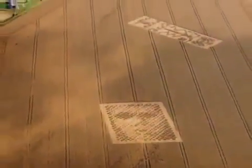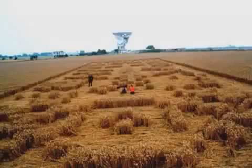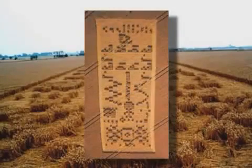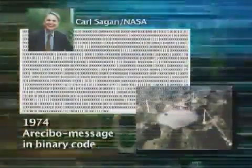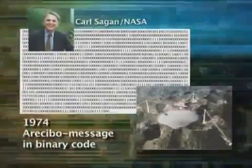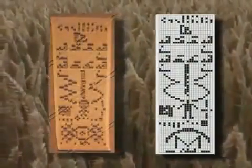Three days later the face was joined by something that looked like a data strip — rows of counters made out of standing and flattened crop. But soon an astonishing similarity was discovered: in 1974, astronomer Carl Sagan composed a message that NASA sent into space from the Arecibo telescope in Puerto Rico — binary figures constituting a graphic code presenting key factors about humans and the planet we live on. 27 years later, an identical pattern appeared in a crop field right in front of a similar radio telescope.